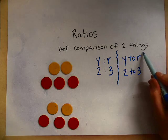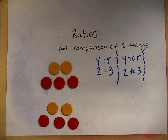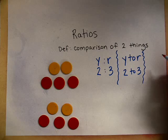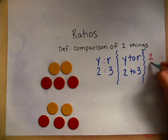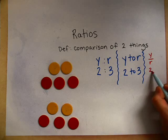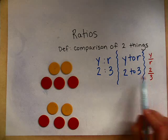And then the last way—this is the way you'll be using most often—I'm going to write it in a different color so it stands out. It looks just like a fraction. So yellow to red, which would be two to three.